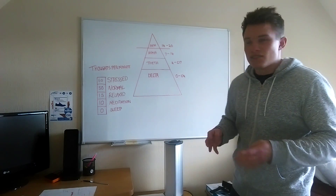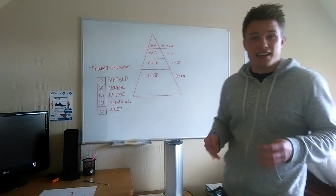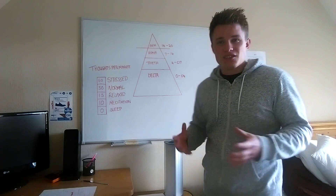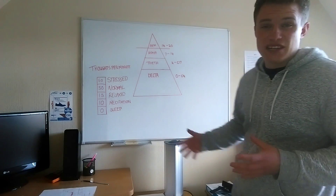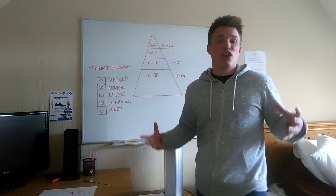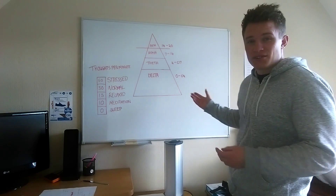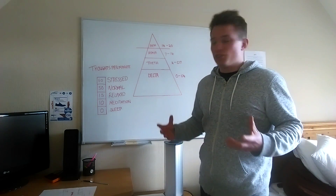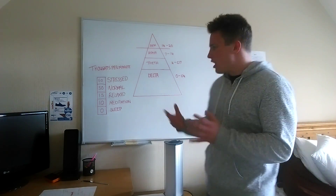Finally, the fourth brain state is delta. Delta is the deepest brain state, typically between zero and four electrical pulses per second. This happens when we're in deep sleep. Delta is all about rest and recovery — it's where human growth hormone is emitted, and it's when we're in delta that we can truly rest and recover to our fullness.